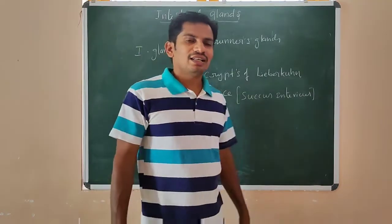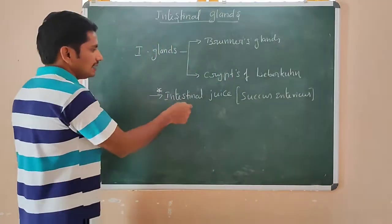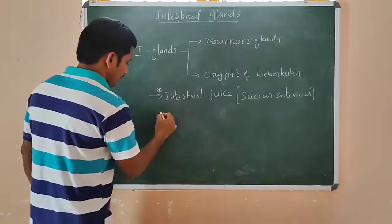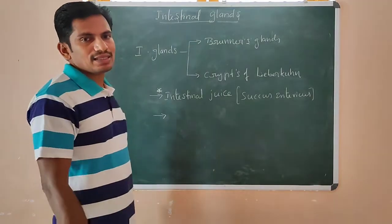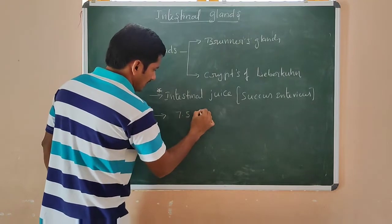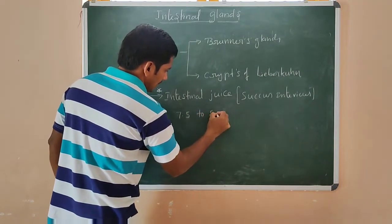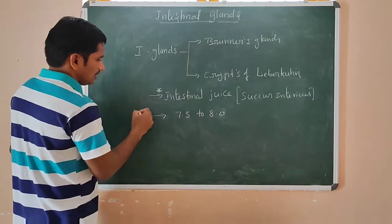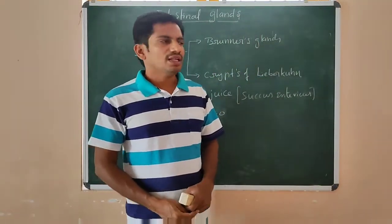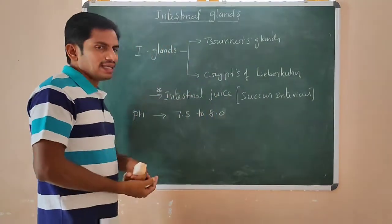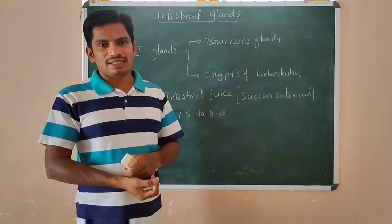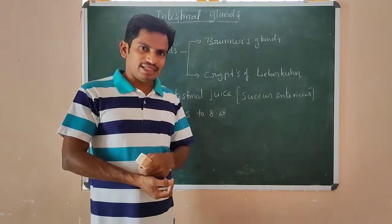See here — in this Succus entericus, the pH is nearly 7.5 to 8. This is the pH of intestinal juice. In these intestinal glands, intestinal lipase is present.